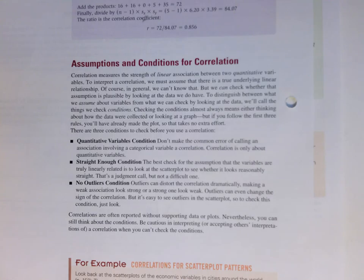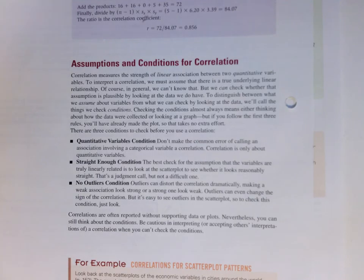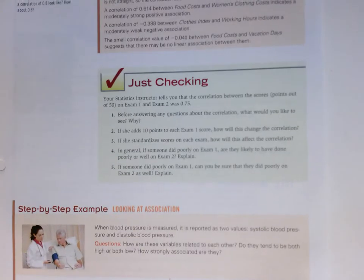We need to start thinking about assumptions and conditions for correlation. And here we have the quantitative variable, straight enough condition, and the no outliers condition. We'll talk more about those in class.